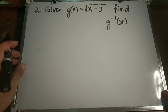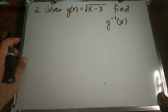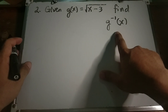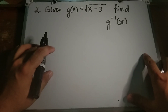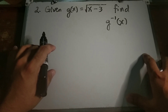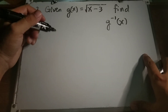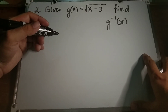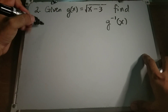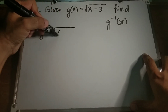Example number two: given g of x equals the square root of x minus 3, find the inverse of g of x. The fact that we're using g of x instead of f of x doesn't change how the process works. The first step: change g of x to y, so we have y equals the square root of x minus 3.